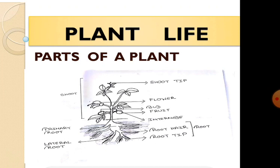Now we know that there are various types of plants around us. Some are small or medium sized whereas others are big, and this shows variations in structure, shape, size, color of their leaves, flower, roots, etc.